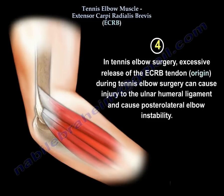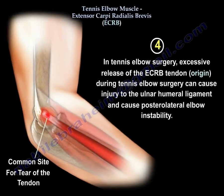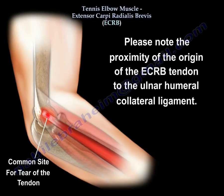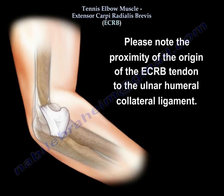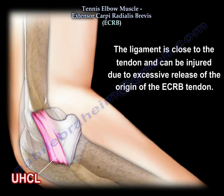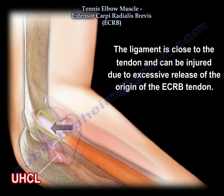Number 4: in tennis elbow surgery, excessive release of the extensor carboidialis previs tendon origin during tennis elbow surgery can cause injury to the ulnohumeral ligament and can cause posterolateral elbow instability. Please note the proximity of the origin of the extensor carboidialis previs tendon to the ulnohumeral collateral ligament. The ligament is close to the tendon and can be injured due to excessive release of the origin of the extensor carboidialis previs.